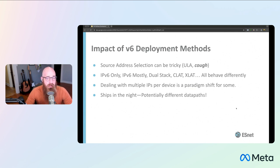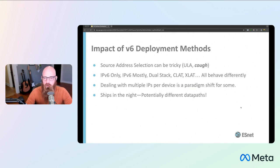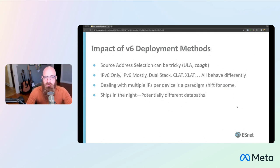Another theme is just the impact of the various V6 deployment methods. It might be very surprising how source address selection works. ULA is a great example — that will really surprise people. Maybe they'll think V6 is working fine because they've got V6 and V4 enabled, but somebody used ULA. That ULA address is not going to be used, and you are not actually testing the V6 code paths when using DNS addresses. There are a lot of V6 deployment methods: V6 only, mostly dual stack, CLAT, XLAT — they all behave slightly differently and have different implications for your application. You have to be cognizant of these deployment methods when writing your software.